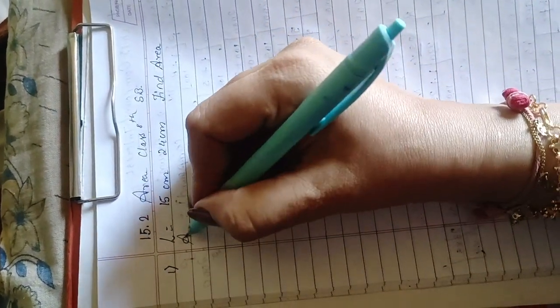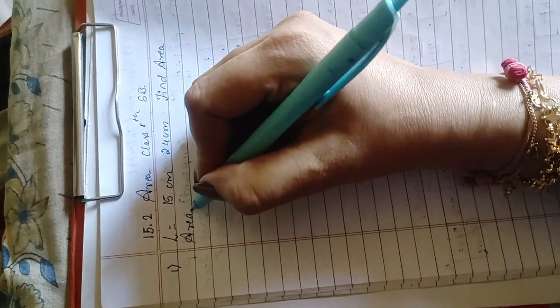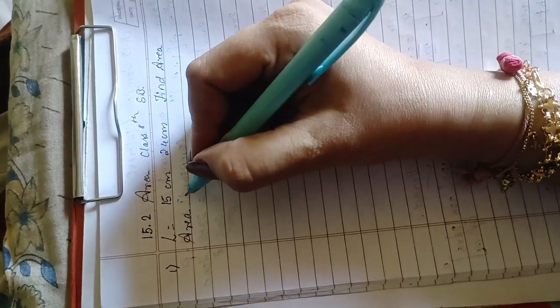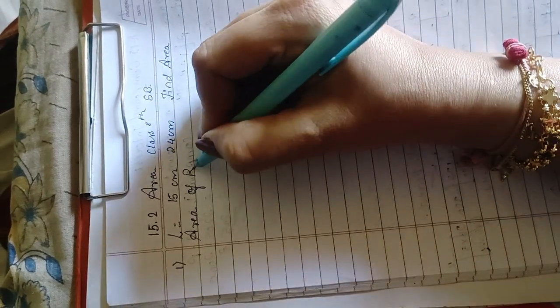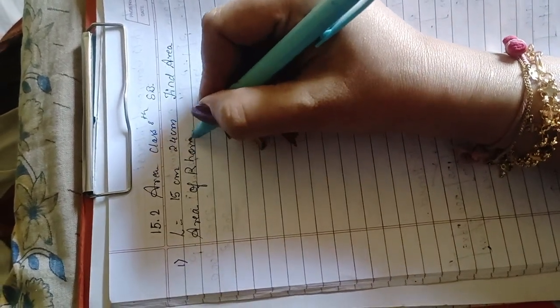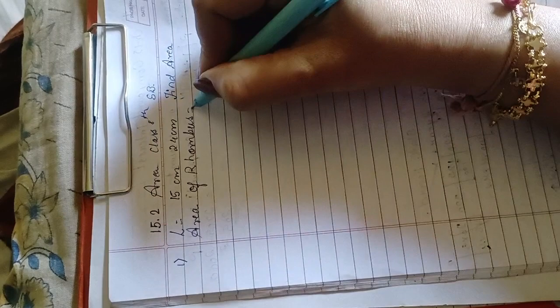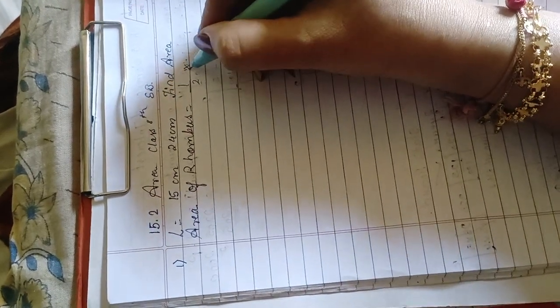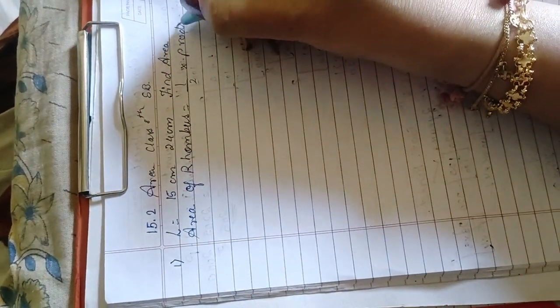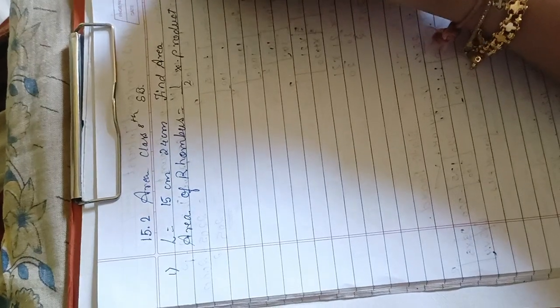First rule, you have to learn and write the formula 5 times every day till your exam. Area of rhombus. What's the area? Half into product of diagonals.